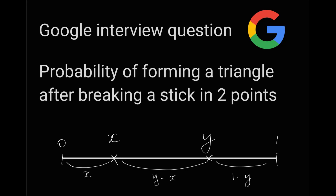Hi everyone, welcome to my YouTube channel. My name is Quentin, but you can call me Q. Today I am going to show you a visual proof for a Google interview question. The Google interview question is about the probability of forming a triangle when you break a stick in two different points.